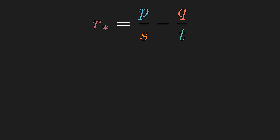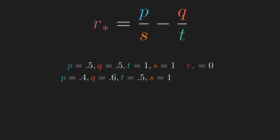Let's look at extreme cases of the Kelly formula. In a perfectly balanced game with equal win/loss chance and equal gain/loss, optimal risk is zero — not worth playing. If you're less likely to win and gain less than you lose, R comes out negative, meaning you'd want to take the short position — be the casino or insurance company. If the game is extremely favorable, R can exceed 1, meaning you should take leverage with borrowed money.